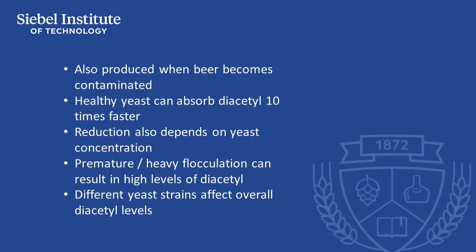Diacetyl is also produced when beer becomes contaminated or infected by some beer-spoiling bacteria. The most important factor in controlling diacetyl levels is to have healthy, vital yeast. Healthy yeast can absorb diacetyl 10 times faster than alpha-acetyllactate is produced, meaning that the reduction of the precursor to diacetyl is generally the rate-limiting step.